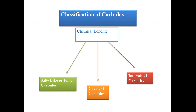Now, the classification of carbides. Carbides are classified on the basis of chemical bonding — the type of chemical bonding present in the compound. On this basis, carbides are classified into three classes: first, salt-like or ionic carbides; second, covalent carbides; and third, interstitial carbides. We will discuss each one by one.